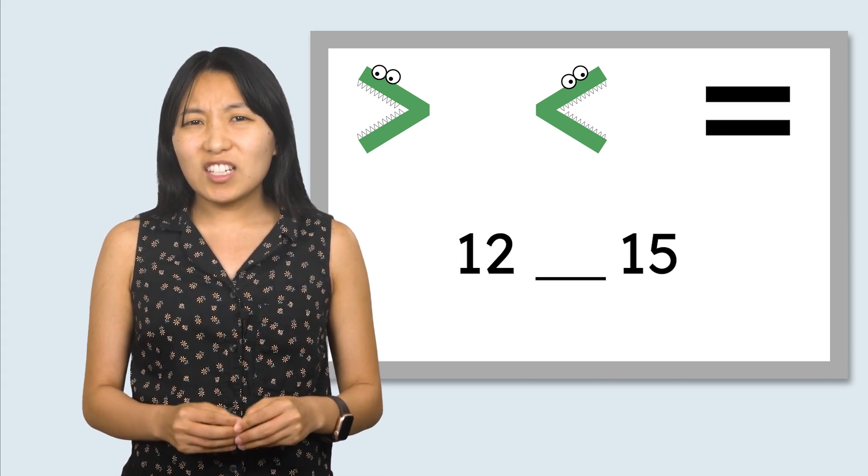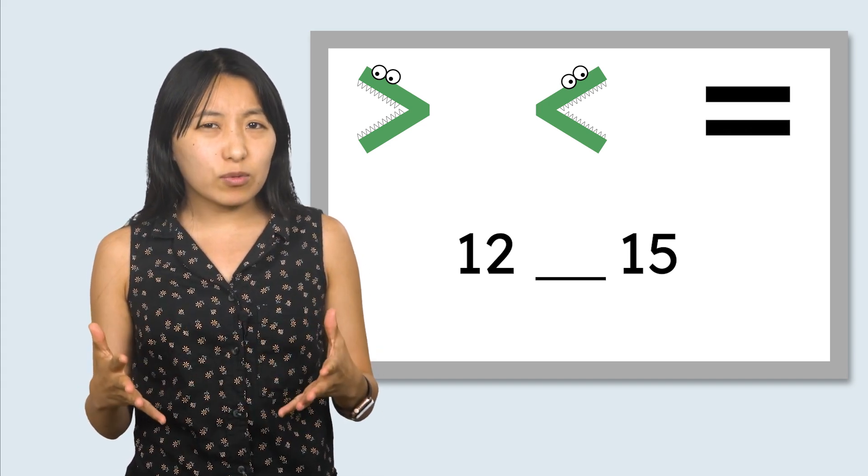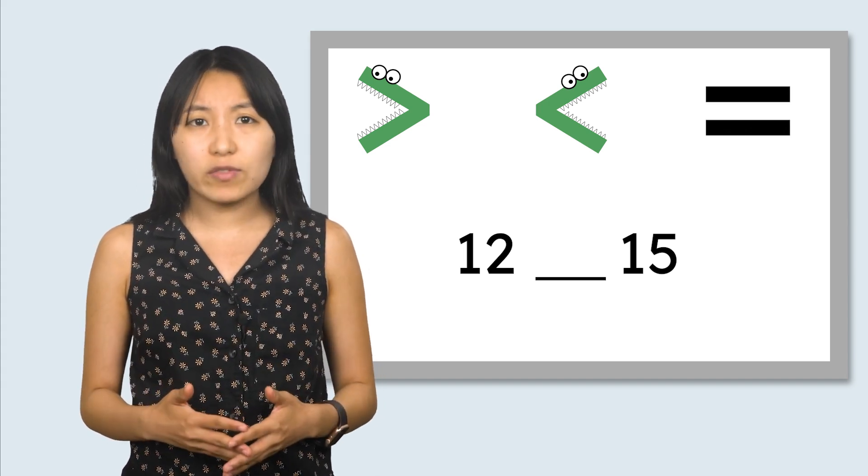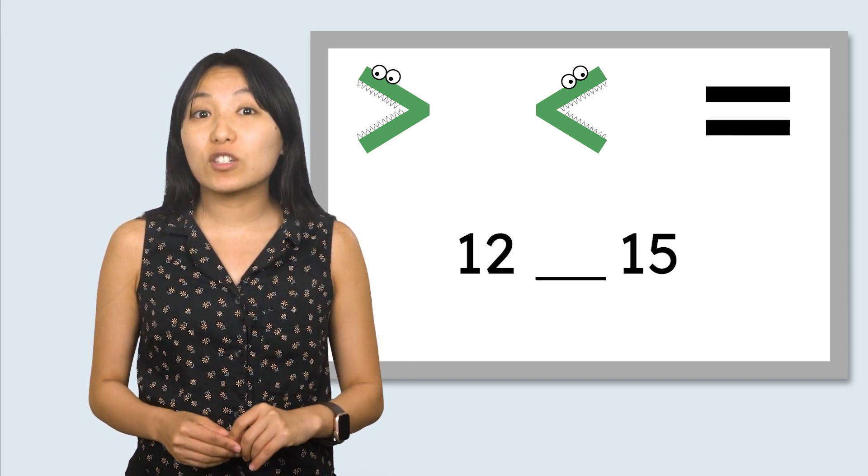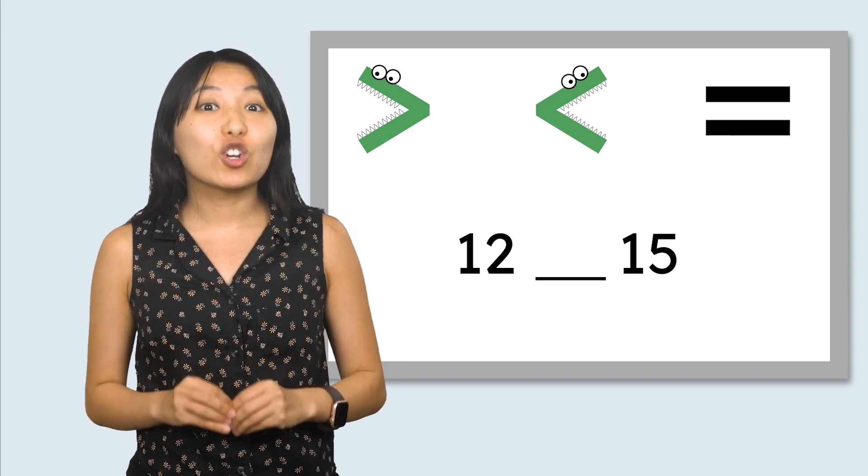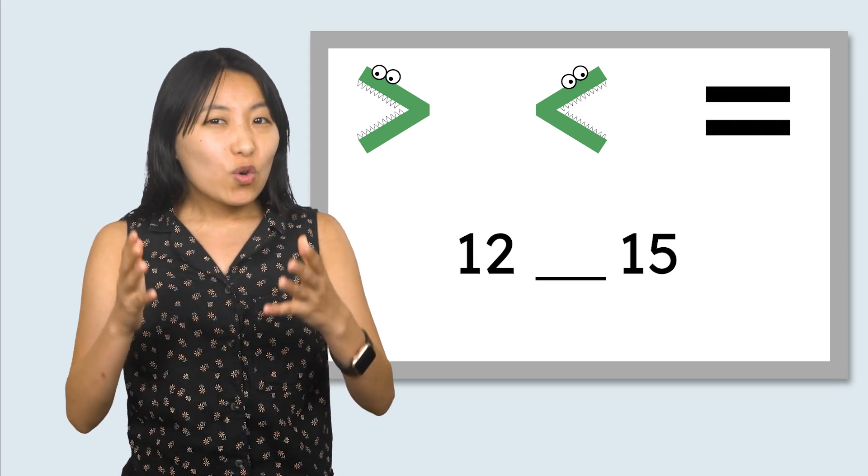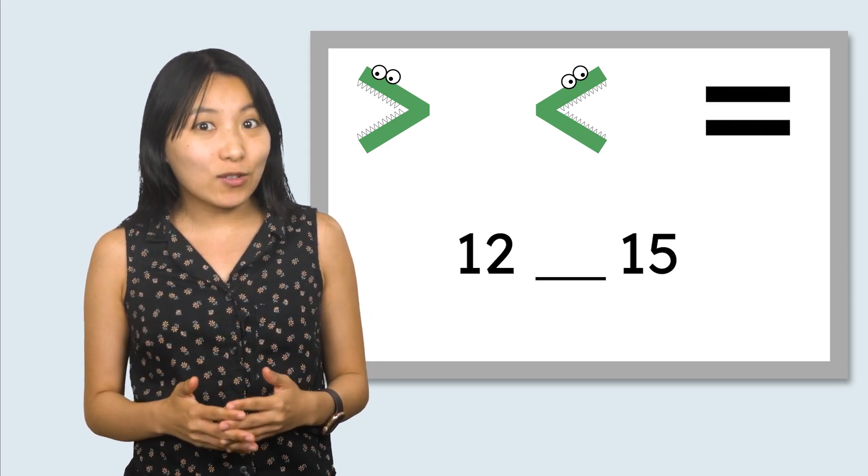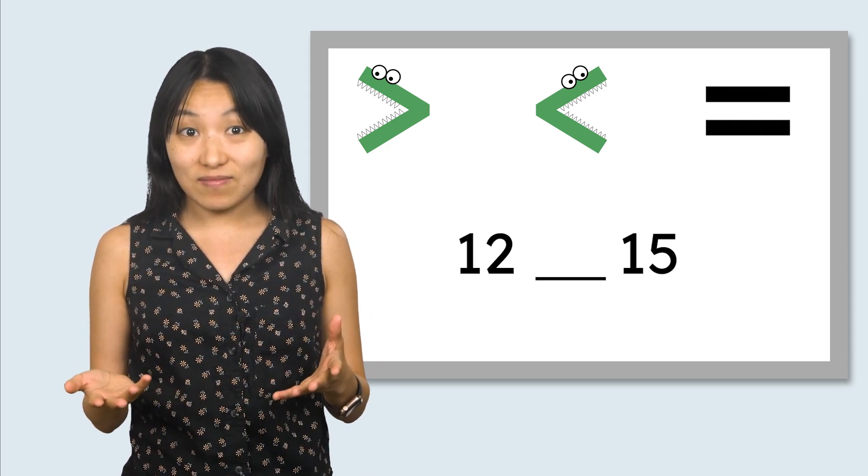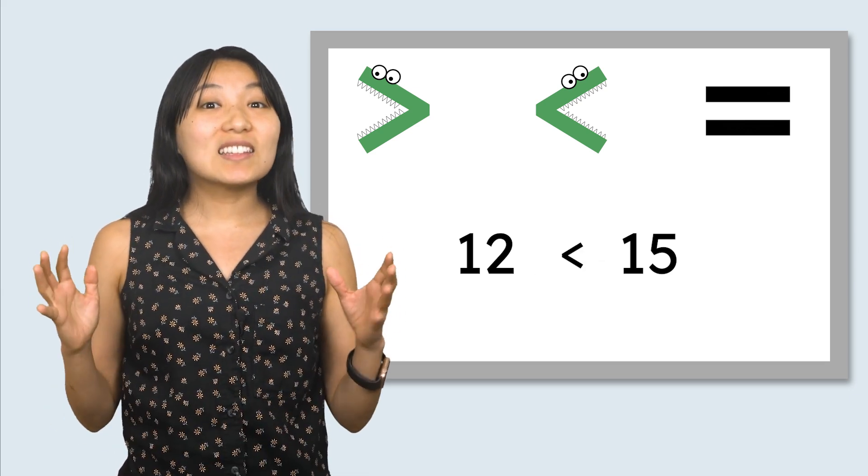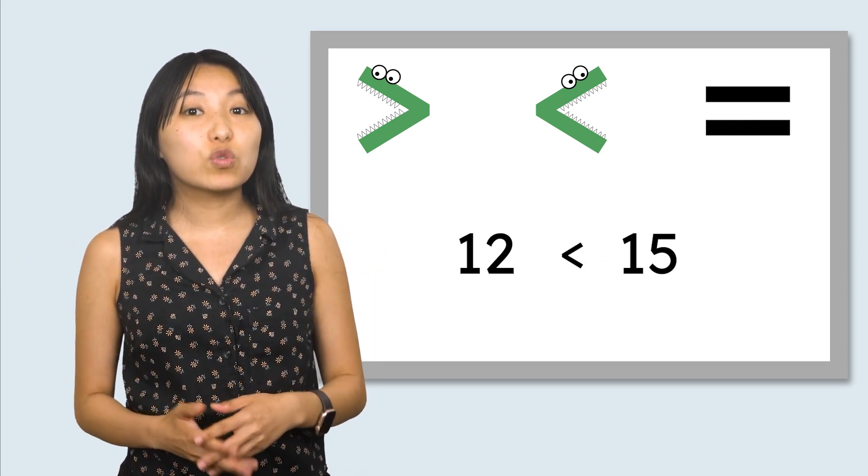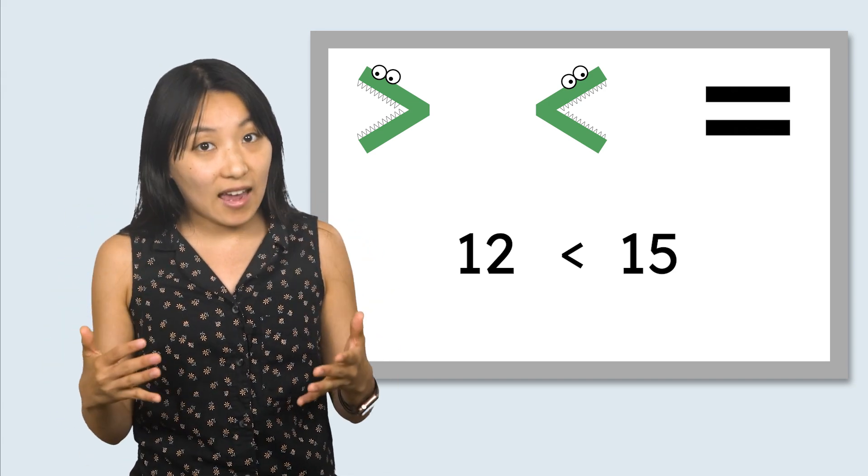But we need to use one of these math symbols to show that 12 is less than 15. Remember, the alligators want their mouths open to the greatest number. Which number do you think the hungry alligators are going to eat? 15. Great job! The less than symbol shows us that 12 is less than 15.